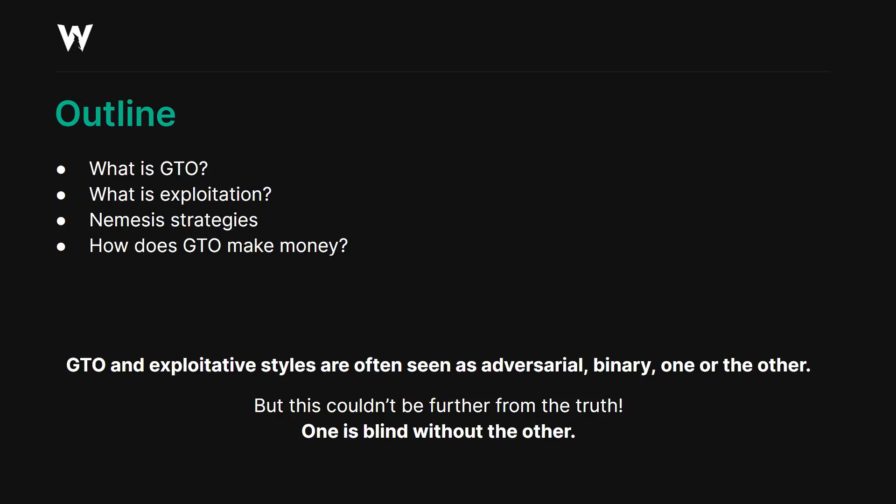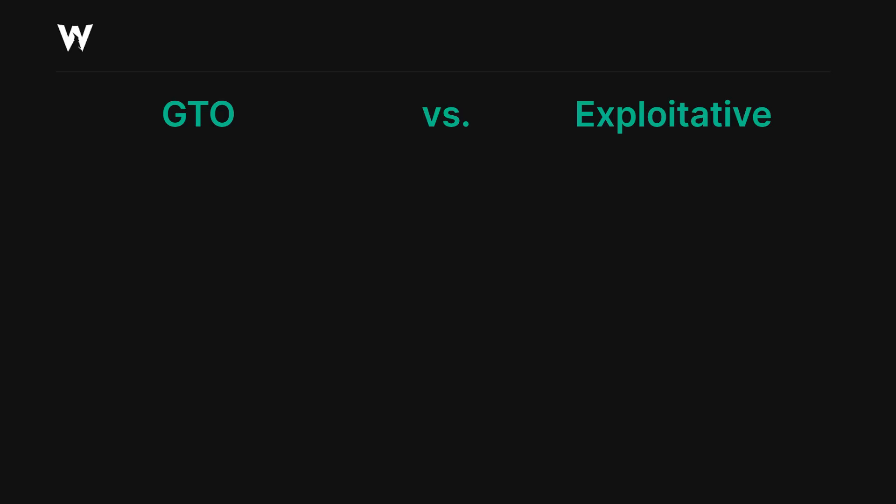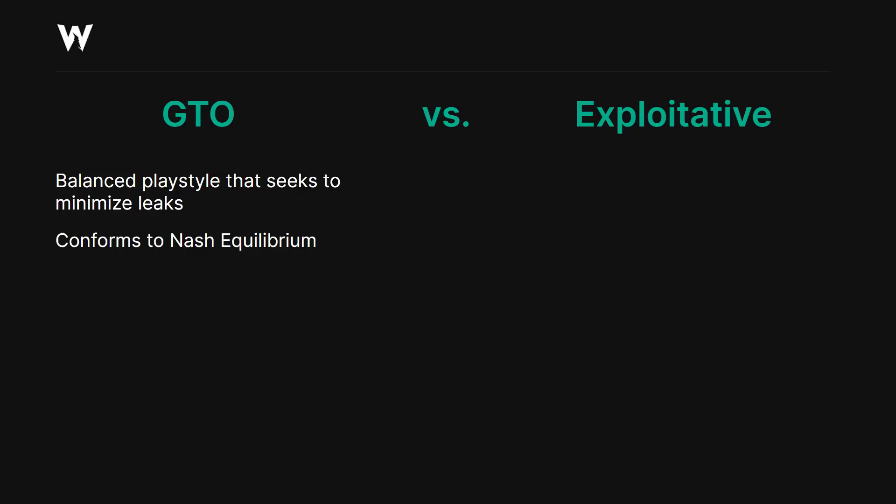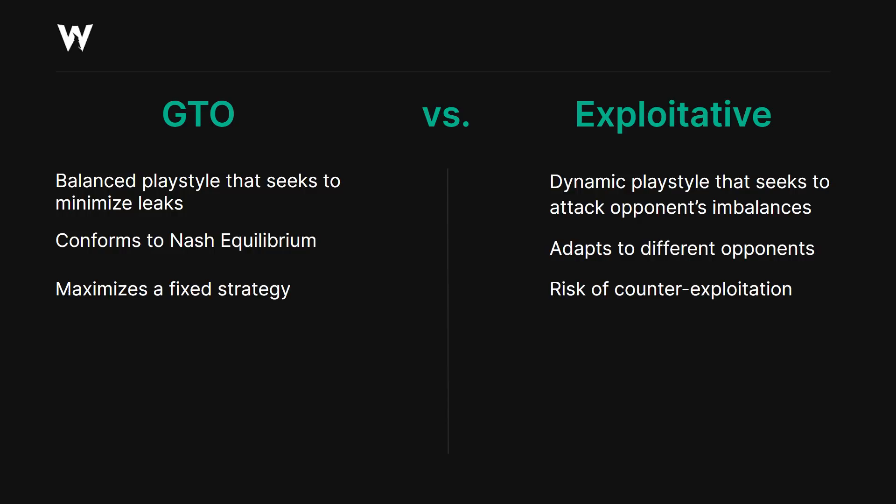First, we need to answer the question of what is GTO and what is exploitative. GTO is a balanced play style that seeks to minimize its leaks. It conforms to the principles of Nash Equilibrium, and it essentially tries to maximize a fixed strategy. Exploitative, on the other hand, is a dynamic play style that seeks to attack your opponent's imbalances. It adapts to different opponents, and it carries a risk of counter-exploitation.